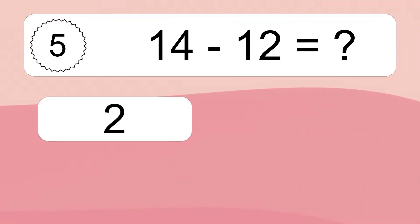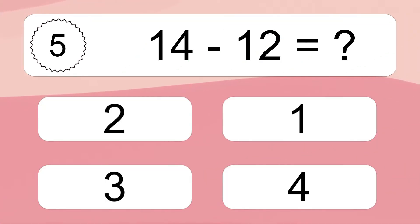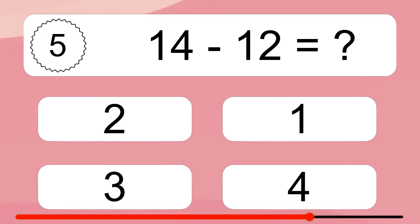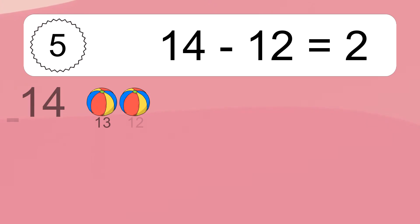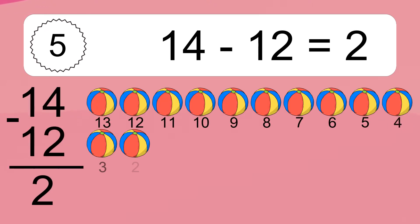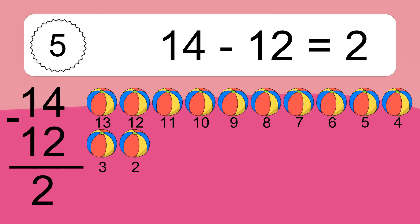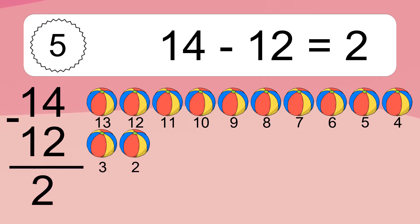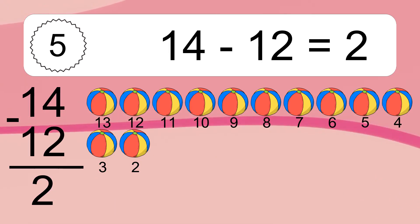14 minus 12 equals what? 14 minus 12 equals 2. Let's count it: 13, 12, 11, 10, 9, 8, 7, 6, 5, 4, 3, 2.